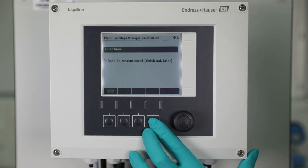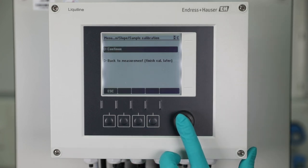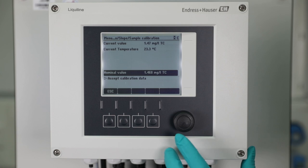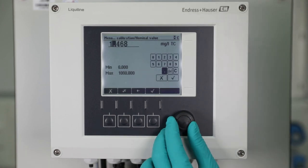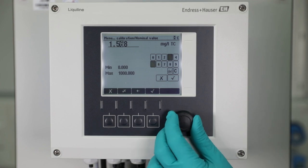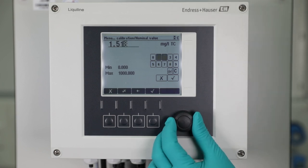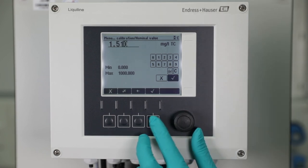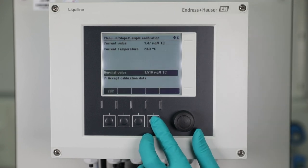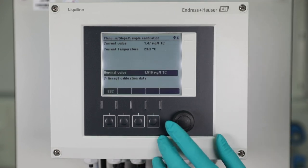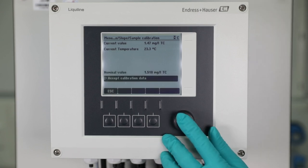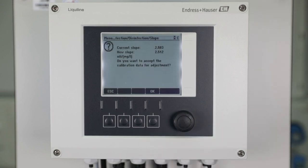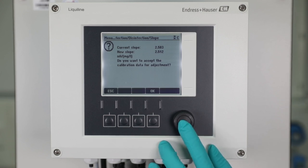Continue with the liquiline by entering the chlorine value which was shown on the photometer. Once the new slope was found to be within the allowed range, the transmitter allows you to store it in the CCS120D sensor head for adjustment.